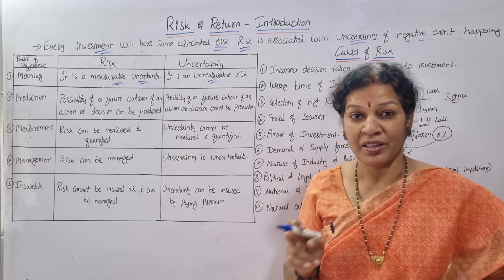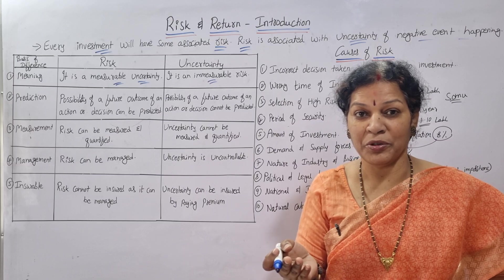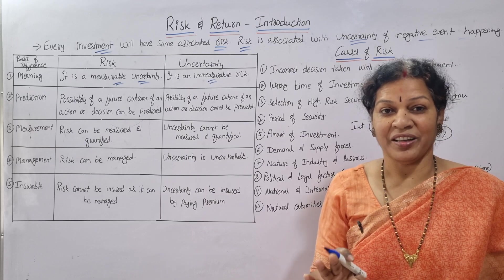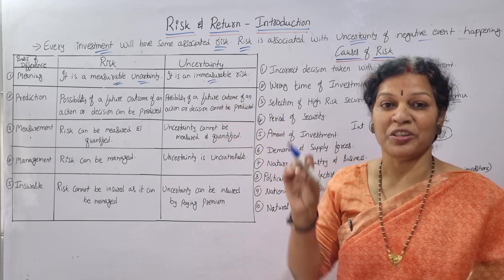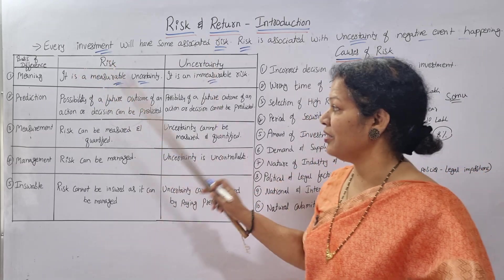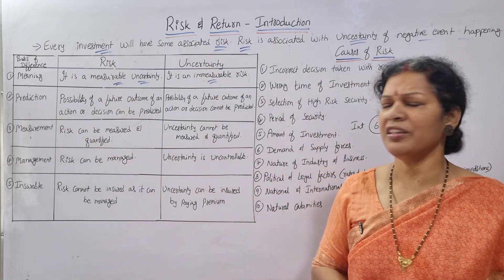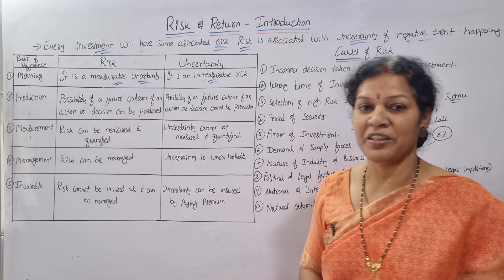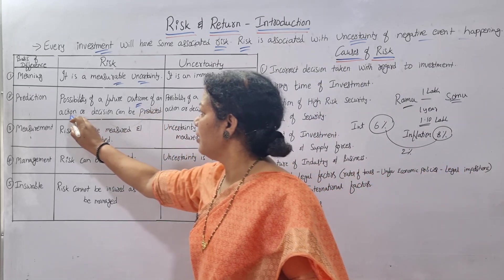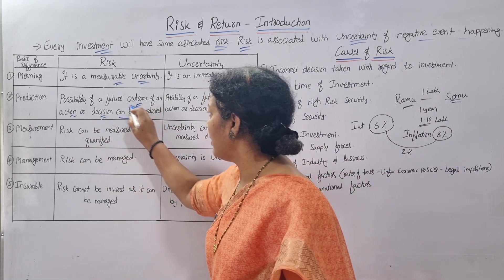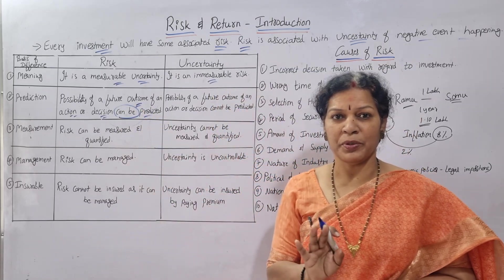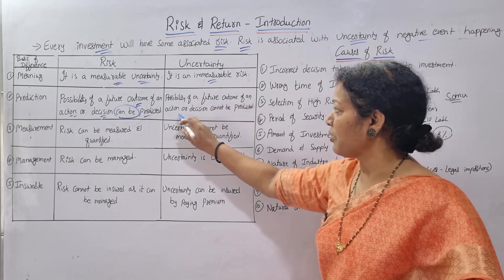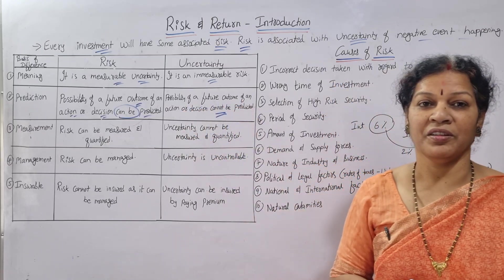Second point: Prediction. The possibility of the future outcome of an action or decision can be predicted in the case of risk — yes, we can predict it. But for uncertainty, the possibility of a future outcome of an action or decision cannot be predicted. That is why we call it uncertainty.